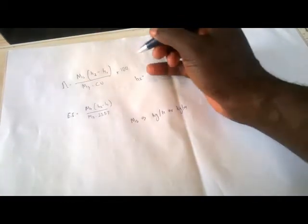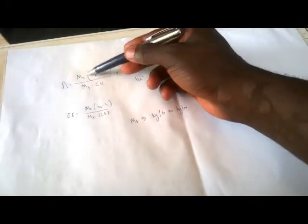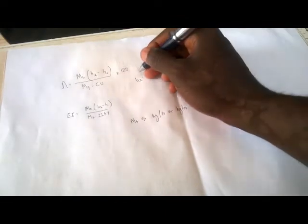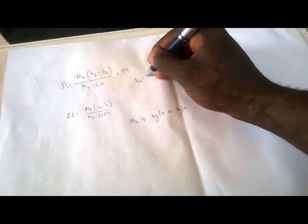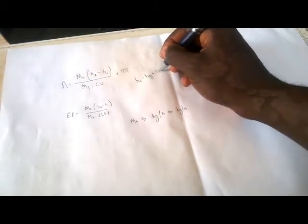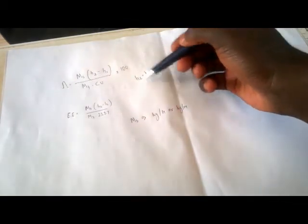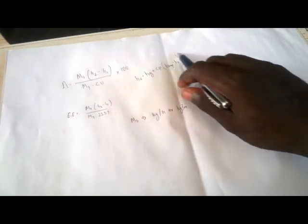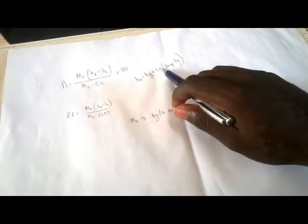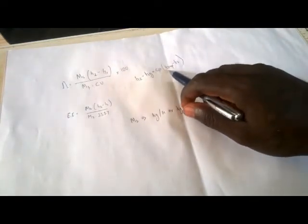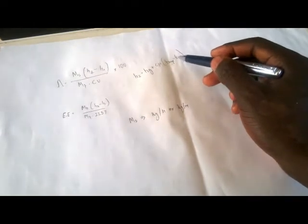Then we have h2. This h2 is either the superheated enthalpy — the question will specify if the steam is being superheated by the boiler. In that case, it's going to be hg plus cp multiplied by the superheated temperature minus the saturated temperature. So if the steam in the boiler is being superheated, we use this formula: the dry saturated steam enthalpy plus the specific heat capacity of the steam, multiplied by the change in temperature.